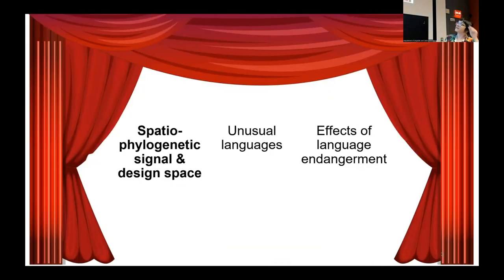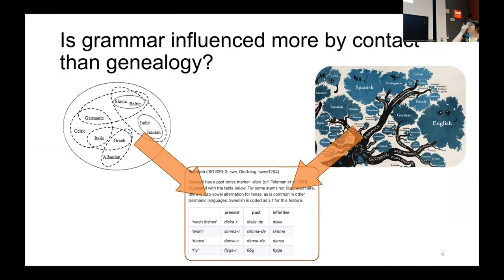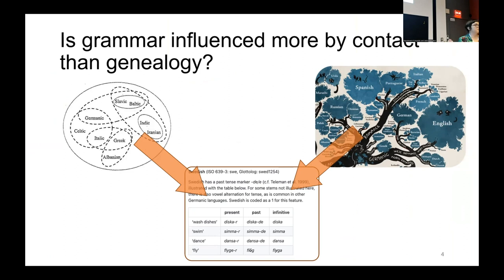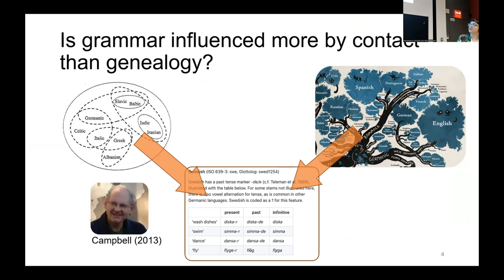I'll start with spatial phylogenetic signal. Linguists have been interested in what shapes grammar — besides universal cognitive constraints, is there an effect of space and contact events, or is there more an effect of language history, as we would expect to see with lexical material? There have been different people who have suggested that grammar falls on one or the other side.